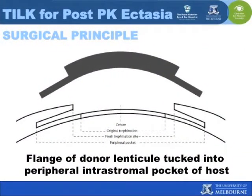Next, a donor tissue will be prepared to match the contour of the host bed. A 9 or 9.5 millimetre trephination of 300 microns in depth will be made in the donor tissue. Lamellar dissection will follow, peripheral to the trephine cut, extending to the limbus circumferentially. The peripheral superficial corneal tissue will be excised.